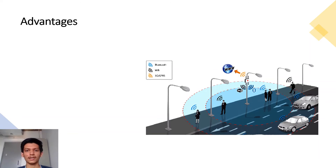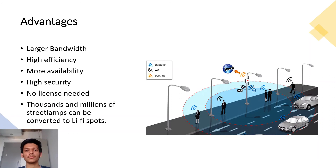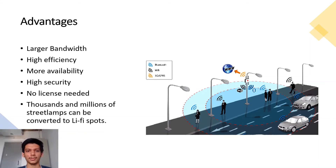The advantages of Li-Fi include larger bandwidth of hundreds of terahertz, high efficiency, greater availability, high security, and no license needed. Thousands or millions of street lamps can be converted to Li-Fi spots. Other advantages include enhanced wireless infrastructure through additional small cells, avoidance of radio frequency spectrum crunch, 10,000 times more capacity, very high peak data rates up to 10 Gbps, enabling the Internet of Things with 100 times more devices, significantly enhanced secure wireless communication, enhanced energy efficiency by combining data communication and illumination, and complete elimination of health concerns.